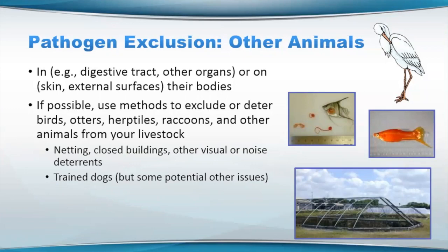You may also need to use visual or noise deterrence. In some cases, unfortunately with birds, they're going to get used to it and you've just got to figure out ways to change that. There were some folks that were using trained dogs to try to chase and move birds away from ponds, but really in some cases the dogs would have to get into the ponds — so there are some biosecurity issues with that as well. On the right I've got a picture of a wading bird here and some of our ornamental fish, and some of the parasites that can be carried by birds into our system.